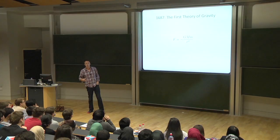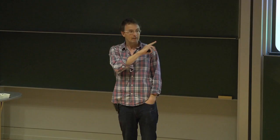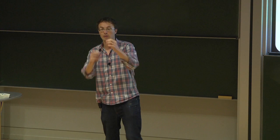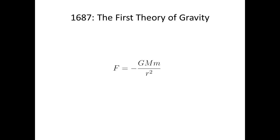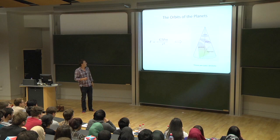It's often said that understanding the one-over-R-squared law was Newton's great achievement, but it's only half true. There were lots of people who had figured out that gravity goes as one over R squared — Christopher Wren, who built St Paul's Cathedral, and Robert Hooke. They'd all figured out that was the right equation for gravity, but they hadn't figured out the most important thing: how to *show* this is the right equation. That's what Newton did.